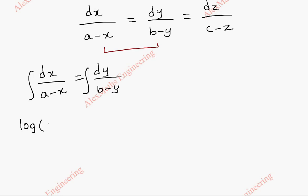This is log of A minus X, but X coefficient is minus, so we have to divide by minus 1. So it will become minus. In the same way, this is minus log of B minus Y plus log C1.